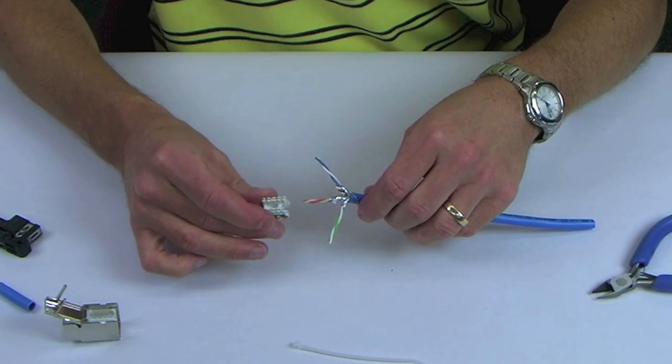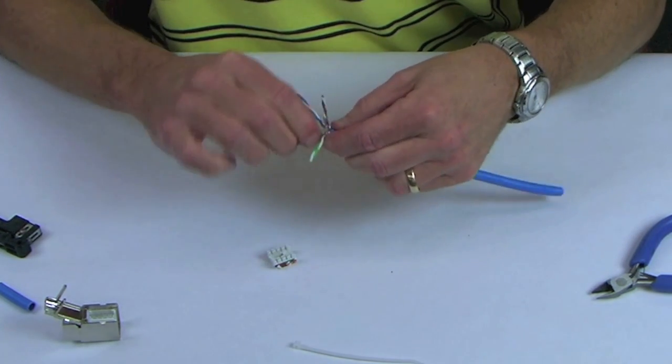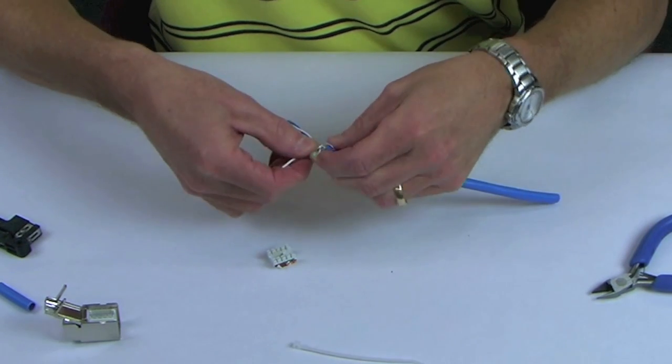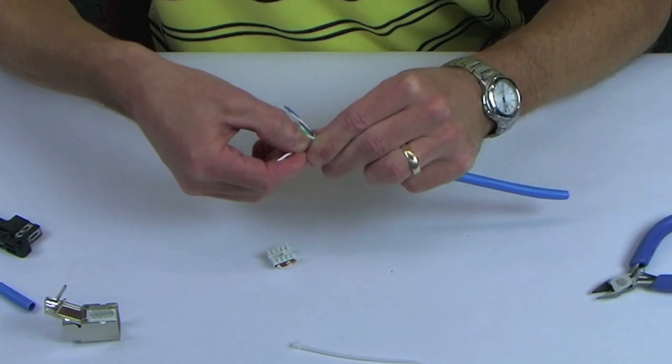Once you have removed the foil, orient the wire pairs into the correct position according to the T568A or B color-coded label on the wire manager.